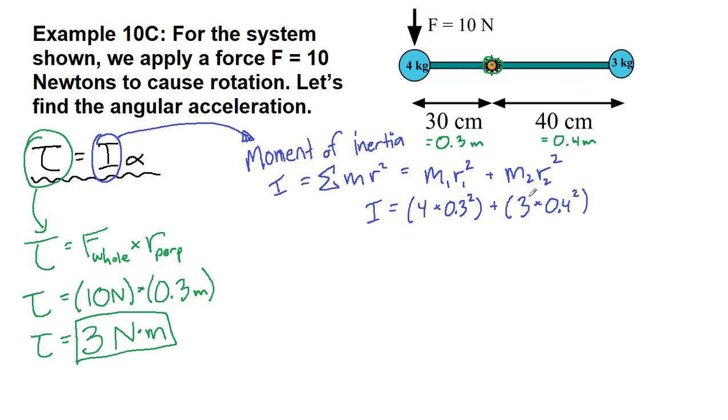Just the distance and not the whole thing. So when we plug that into our calculator, we get 0.36 plus 0.48, and we end up with 0.84 kilograms times meters squared, because we have a mass unit times a distance unit squared.